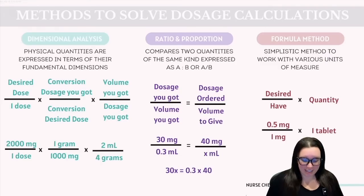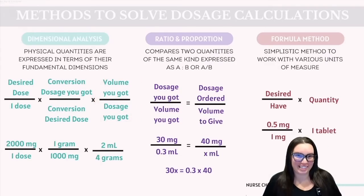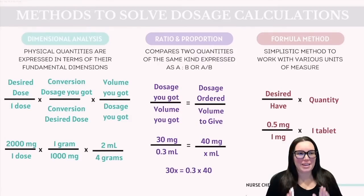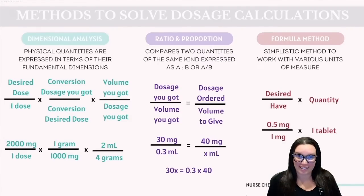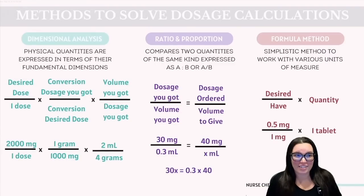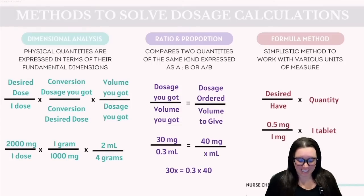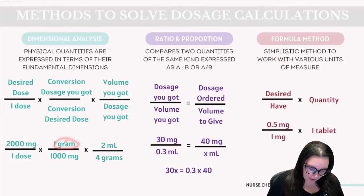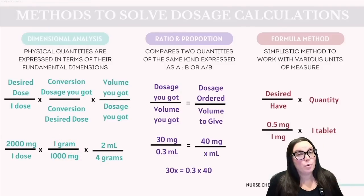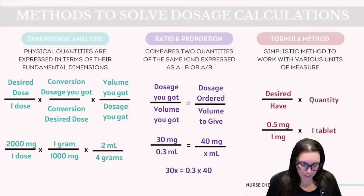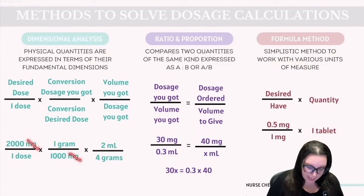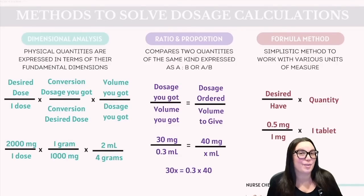The last fraction is the volume you have over the dosage you have. Here's a quick pro tip: the placement of your units in this equation is crucial to solve it correctly. You've got to align them so that similar units cancel each other out, leaving you the exact units you need. For instance, I have to have milligrams here and milligrams here in order to cancel them out, and grams here and grams here in order to cancel those out.